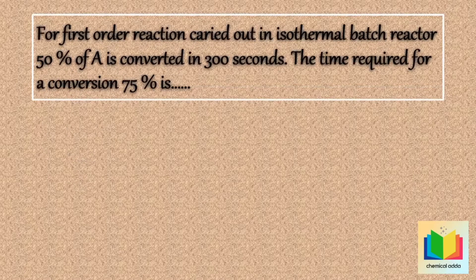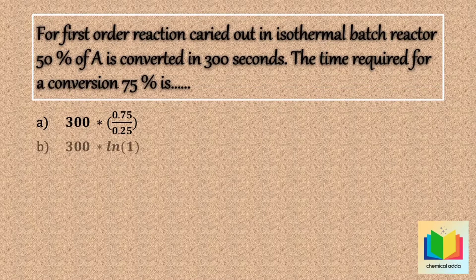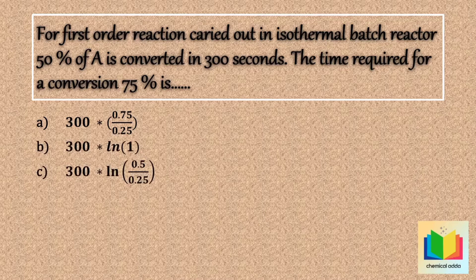Next question: for a first order reaction carried out in an isothermal batch reactor, 50% of A is converted in 300 seconds. The time required for 75% conversion is — option A: 300 × 0.75/0.25; option B: 300 × ln(1); option C: 300 × ln(0.5)/0.25.